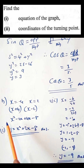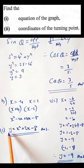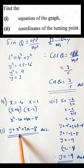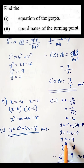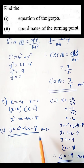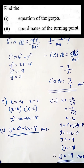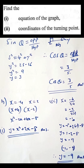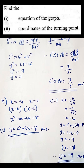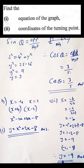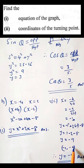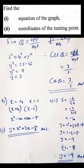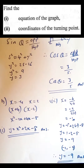To find the y-coordinate, we substitute x = -1 into the equation y = x² + 2x - 8 and get y = -9. So the coordinates of the turning point are (-1, -9), and the equation of the turning point line is y = -9.